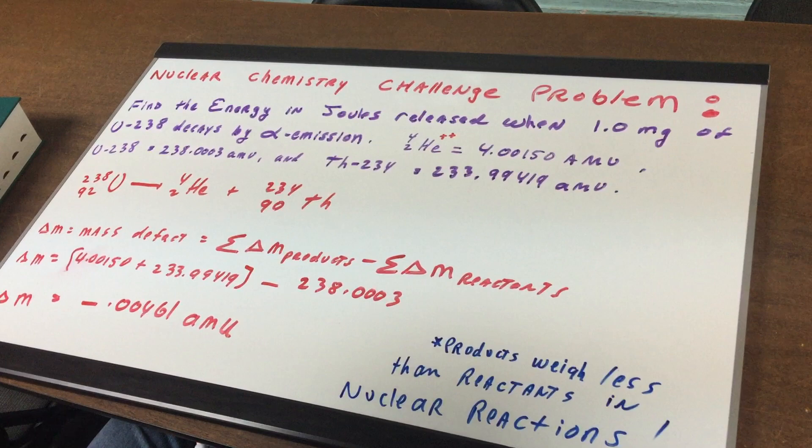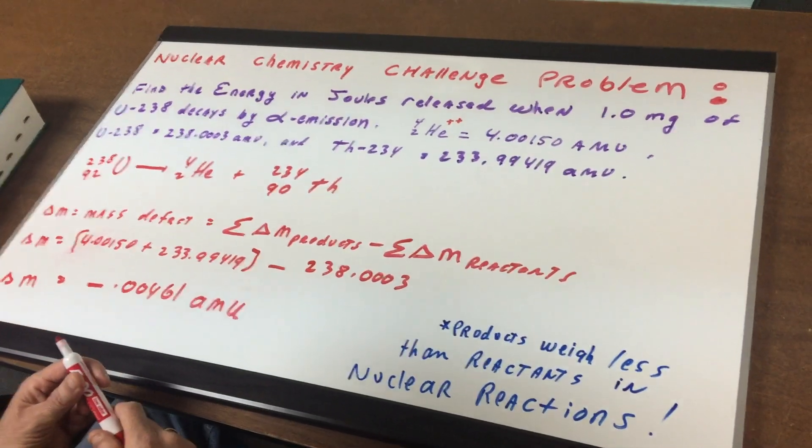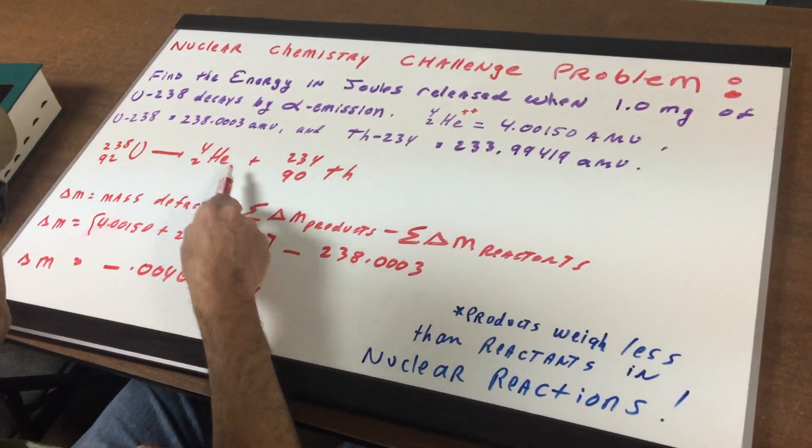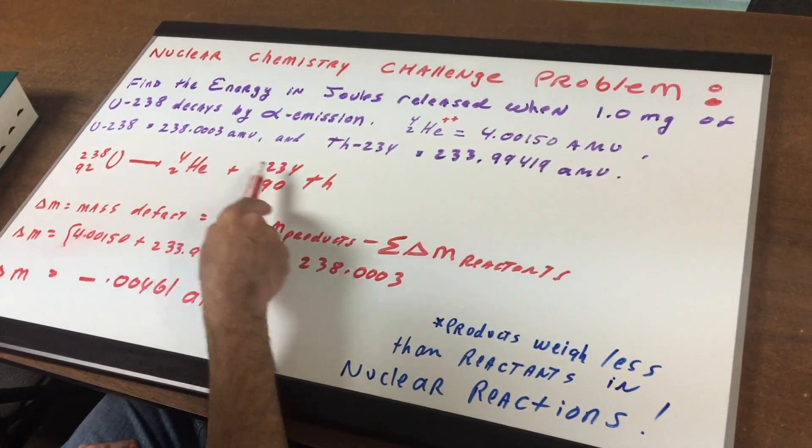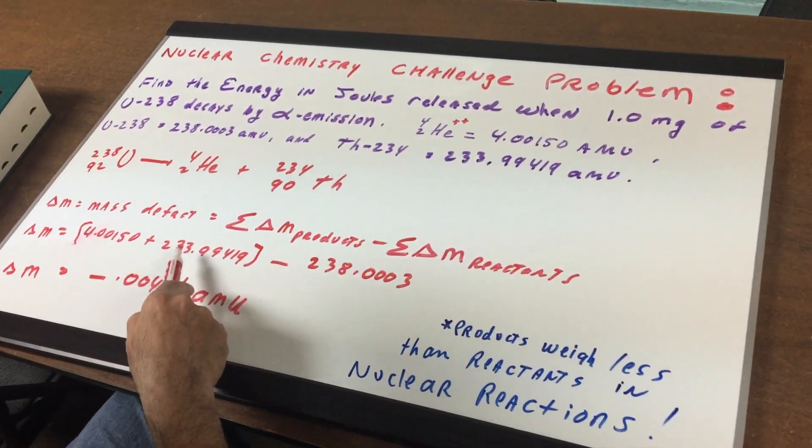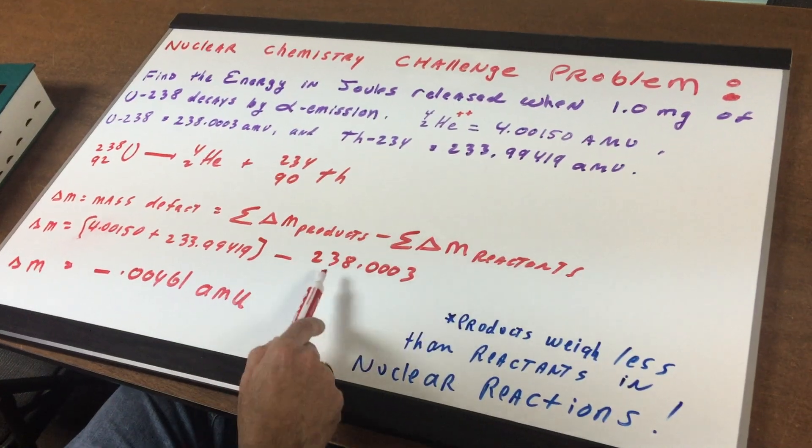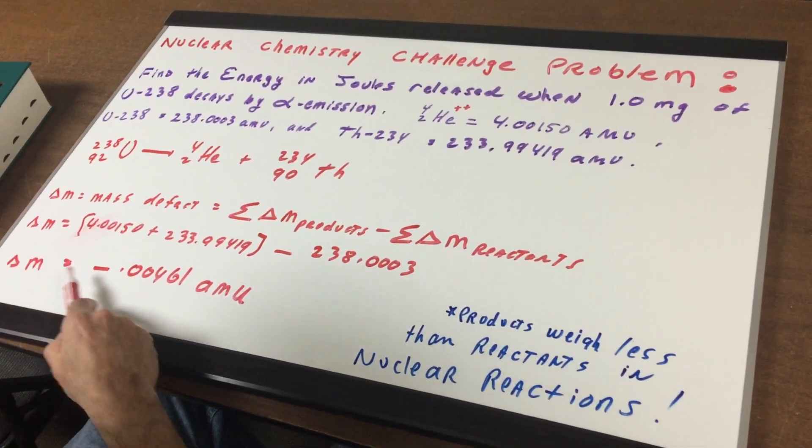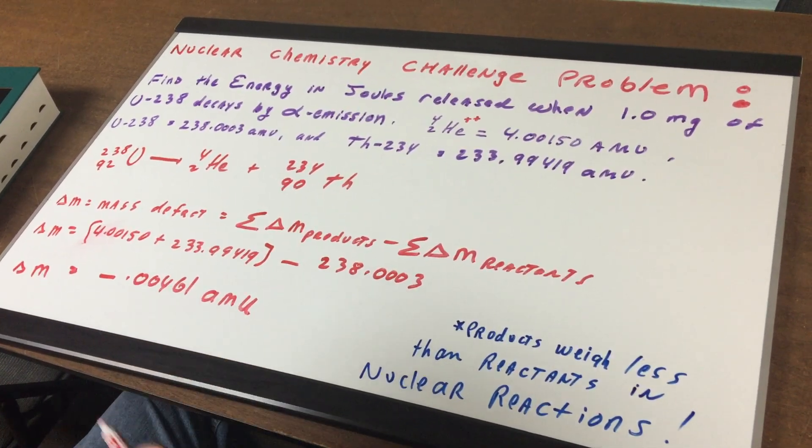Now, I want you to never forget something. The products always weigh less than the reactants. So what we're going to do is to calculate what is known as the mass defect. So the change in mass or the mass defect will be the sum of the mass of the products minus the mass of the reactants. If you added up the mass of the products, which is one alpha particle and one thorium nuclei, you add 4.00150 and the 233.99419. And you subtract that from the mass of the uranium. And that was 238.003. That gives you a negative number. The negative means mass has been lost.